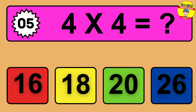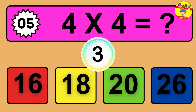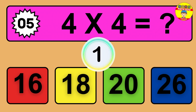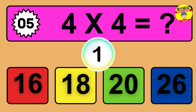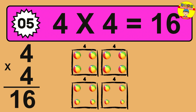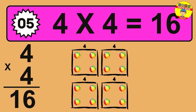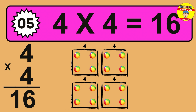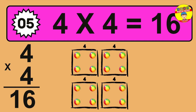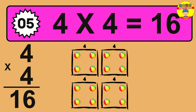Question 5. 4 times 4 equals what? The answer is 4 times 4 is 16. To calculate, we have 4 groups with 4 balls each one. So how many balls do we have? 16 balls.